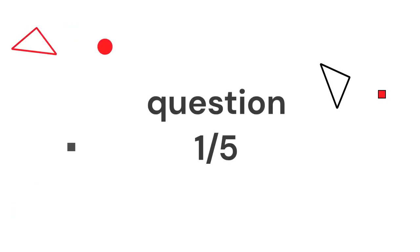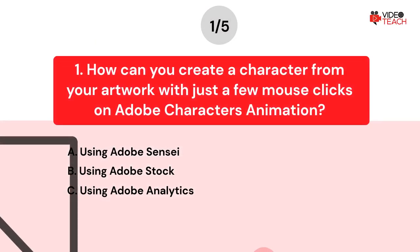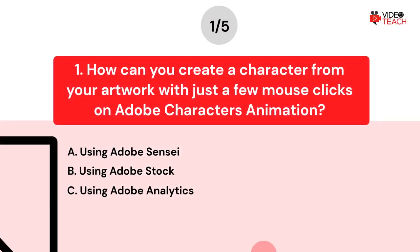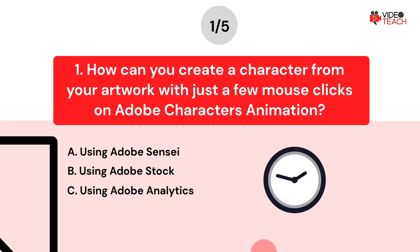Question number one. How can you create a character from your artwork with just a few mouse clicks in Adobe Character Animator? Option A: Using Adobe Sensei. Option B: Using Adobe Stock. Option C: Using Adobe Analytics. Now you have about 15 seconds to think about your answer.